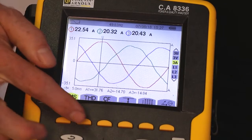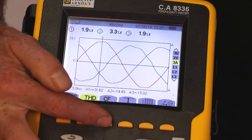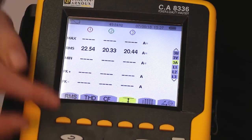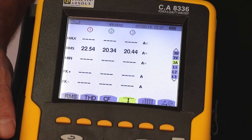On the fast keys, we're able to look at total harmonic distortion. Also, we can select crest factor, or we can select min and max. So it shows us the minimum and maximum rms positive and negative peaks of the currents and voltages we're looking at.